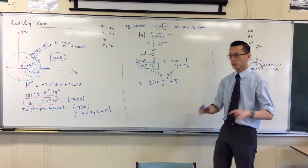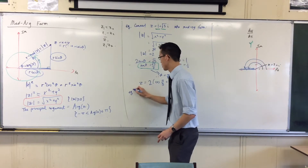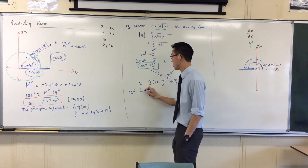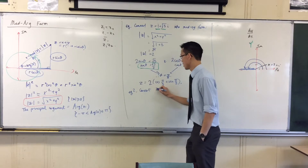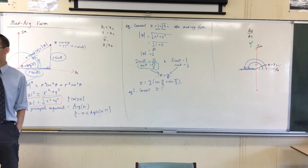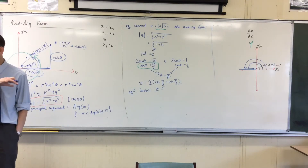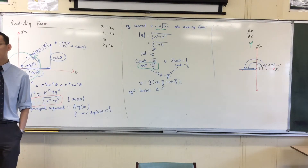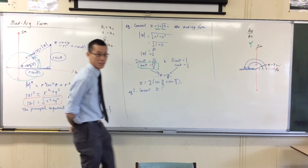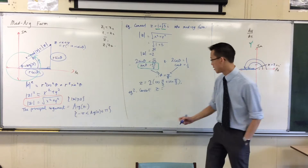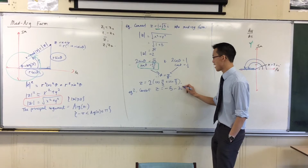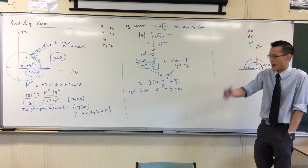Alright, as requested, let's have a look at an example where we convert a complex number. You help me out — give me a complex number in the third quadrant, any one you like. Negative five? That takes me to the left. Minus three i? Alright, fine.